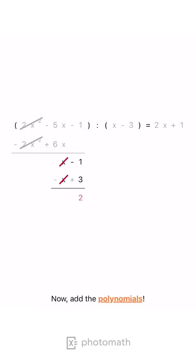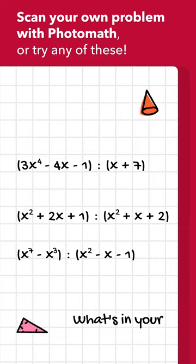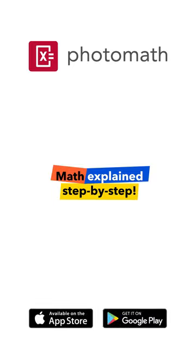The result is 2x plus 1 with a remainder of 2. 2x plus 1. 4x plus 1. 4x plus 2. 6x plus 1.